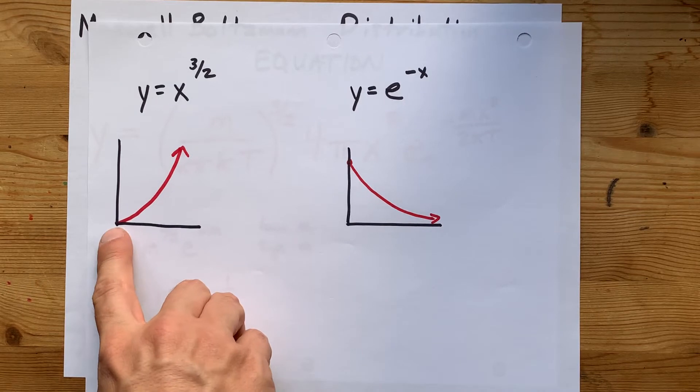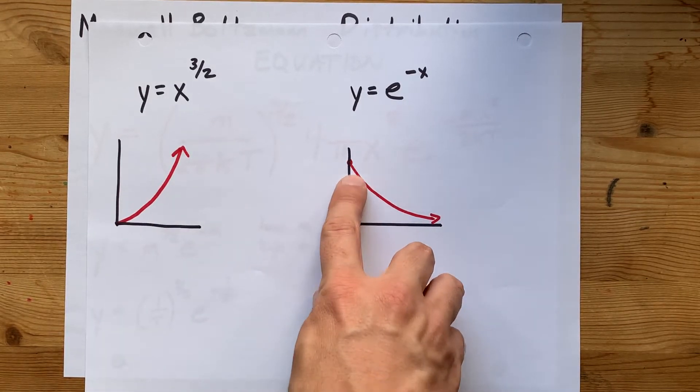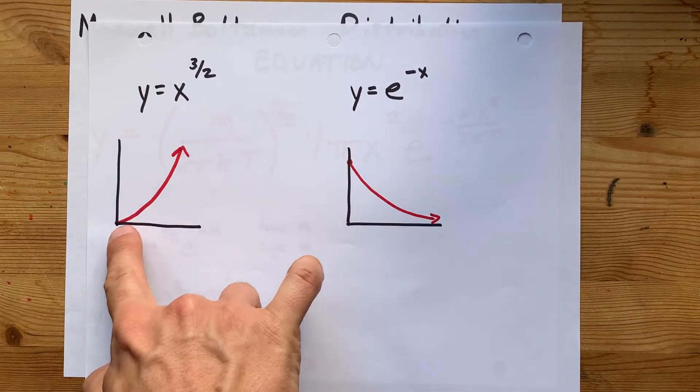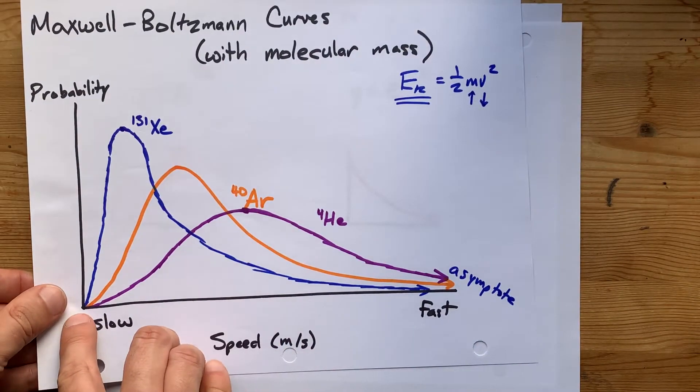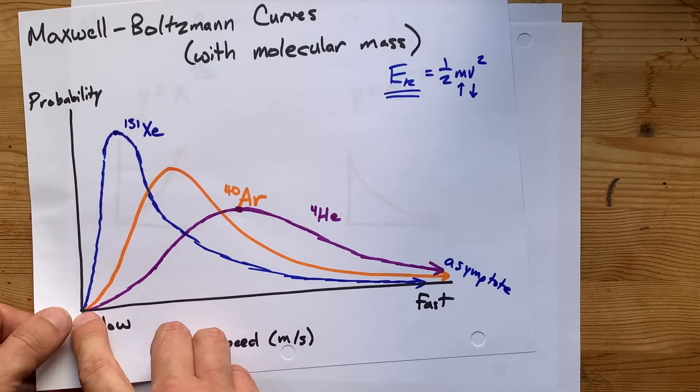That's why here at 0, 0, no matter how high this, or no matter what the X value is here, when you multiply 0 times literally anything, you're going to get 0. That's why all of these Maxwell-Boltzmann distributions start at 0, 0.